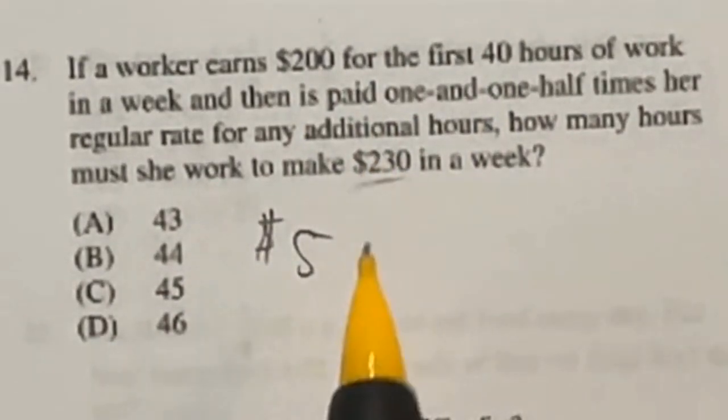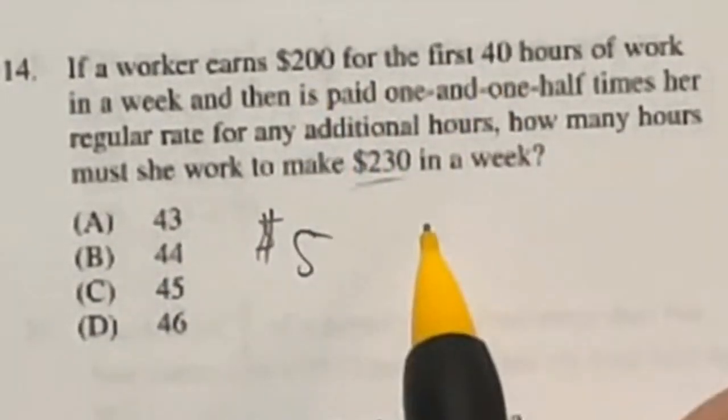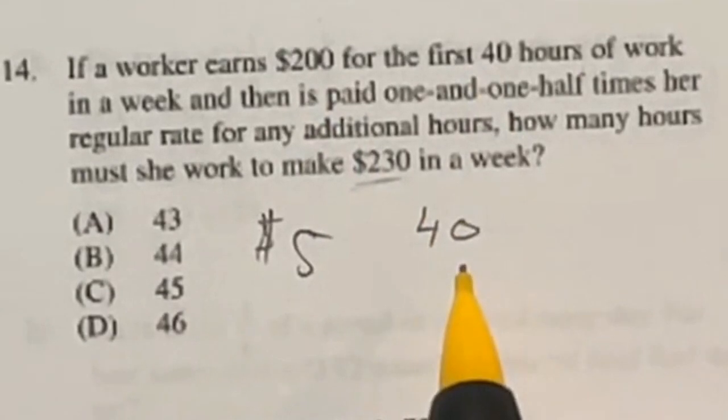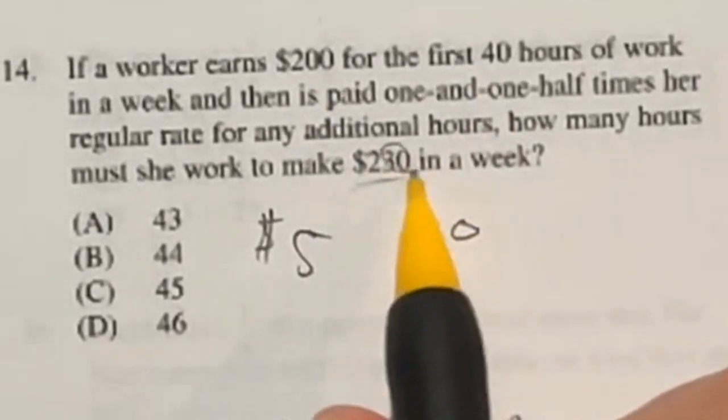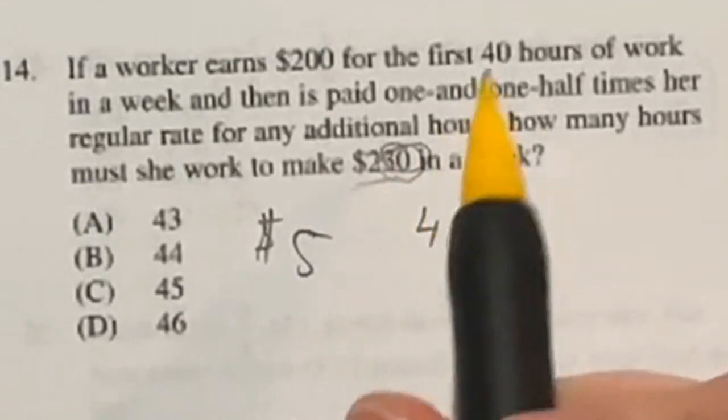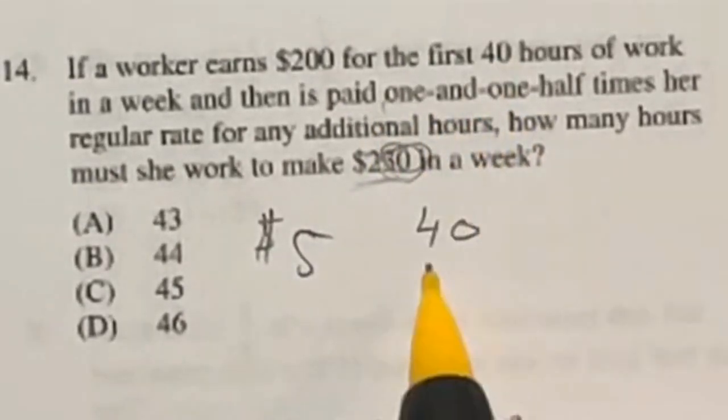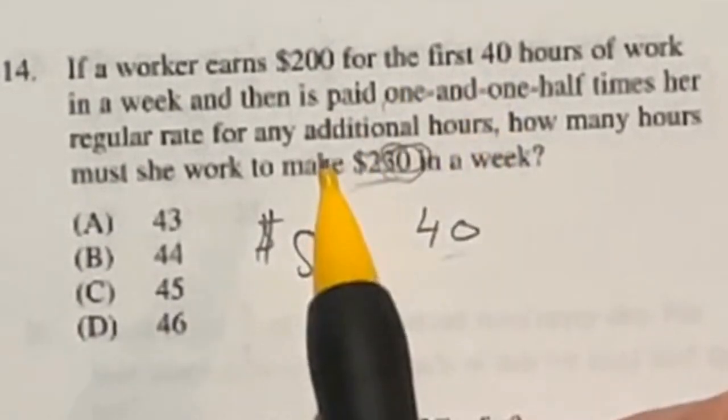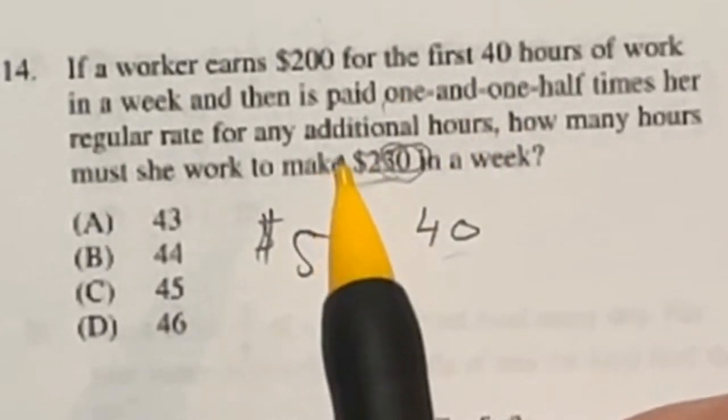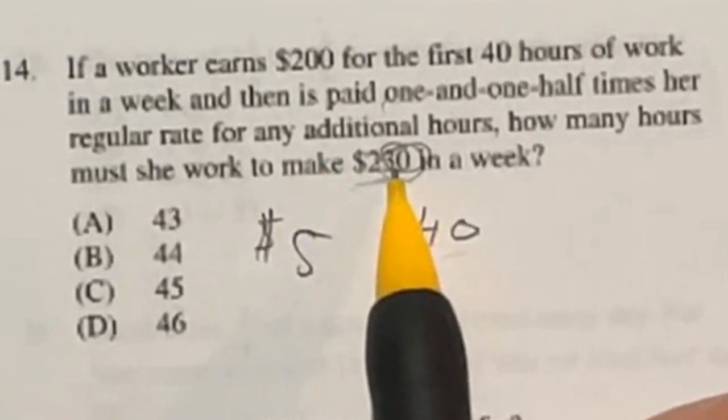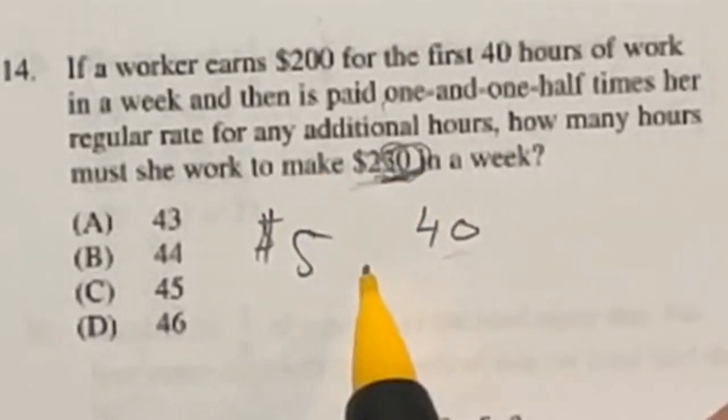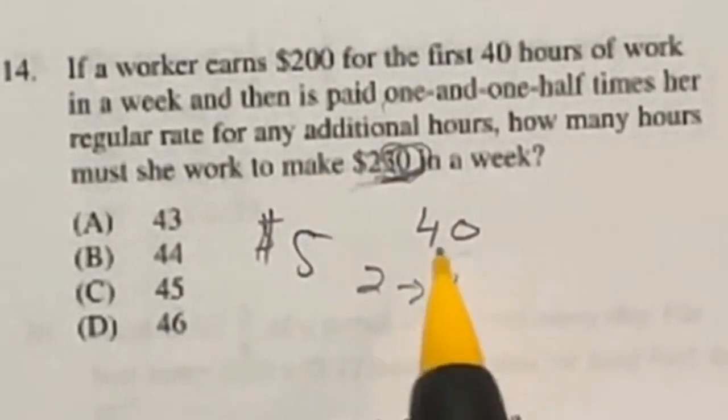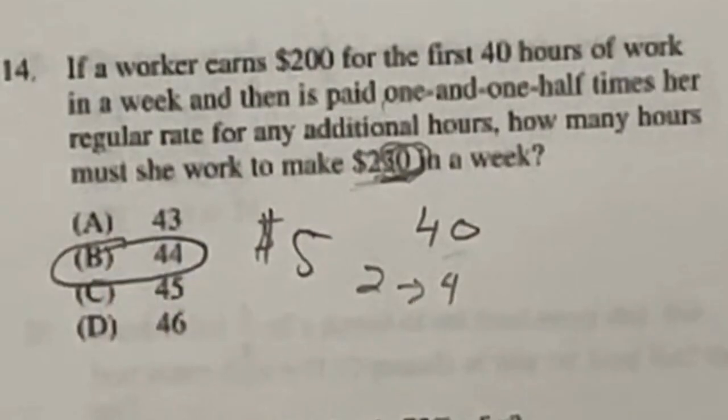So from there, you need to think, all right, well, 200 is the first 40. So we're at least 40 hours in. Now what do we need to get to get an additional 30? Well, I know that for every two hours now at time and a half past the 40, for every two hours, I'm going to be making 10 plus half of that. So that would be another 5, so that's going to be 15. Well, $15 twice gives me that 30. So instead of working two hours, we're going to need to work 4. So 40 plus the 4 gives me 44 hours for answer B.